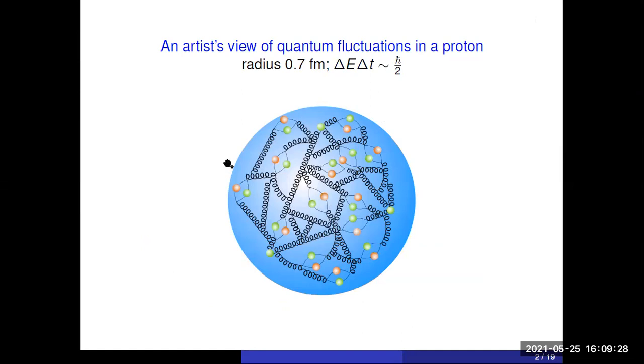The main object will be the proton or neutron, which is something which is really dominated completely by quark, antiquark, and gluonic quantum fluctuations, which exists because of the uncertainty principle.